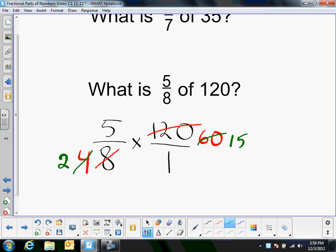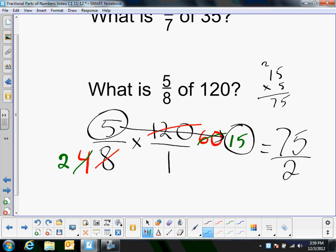So I'm basically ready to finish and multiply. So I have five times 15 for my numerator. 15 times five, if you don't know, is 75. And then on the bottom, two times one is two. So I have 75 over two.